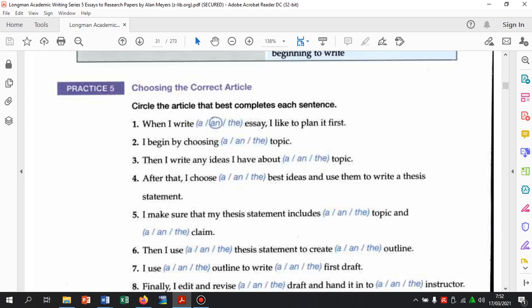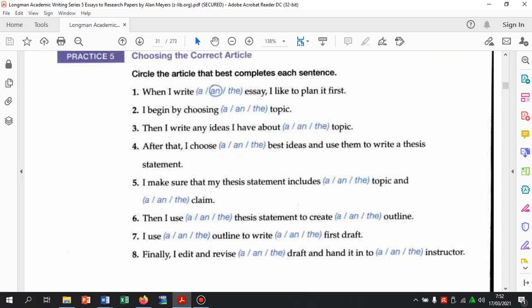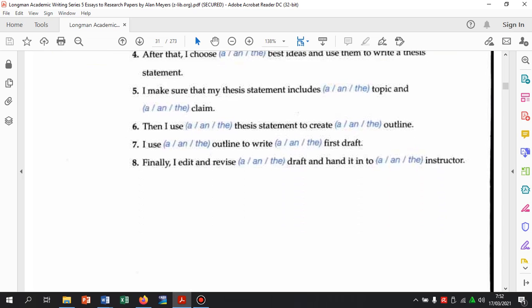Nah, kita coba latihan. Try to do these exercises. Jadi misalnya contohnya di sini. Number one. When I write, boleh pakai A, An, atau The. Pilih yang mana yang benar. You have to circle it or you have to write directly. When I write an essay, I like to plan it first. Kenapa essay pakai an? Kenapa tidak pakai a? Karena dia vowel. Bunyinya essay. Terus kenapa nggak pakai the? Karena essay secara general. Yang kedua, I begin by choosing A, atau An, atau The. Nah, you have to determine it. Ini gampang. Sebentar saja selesai.